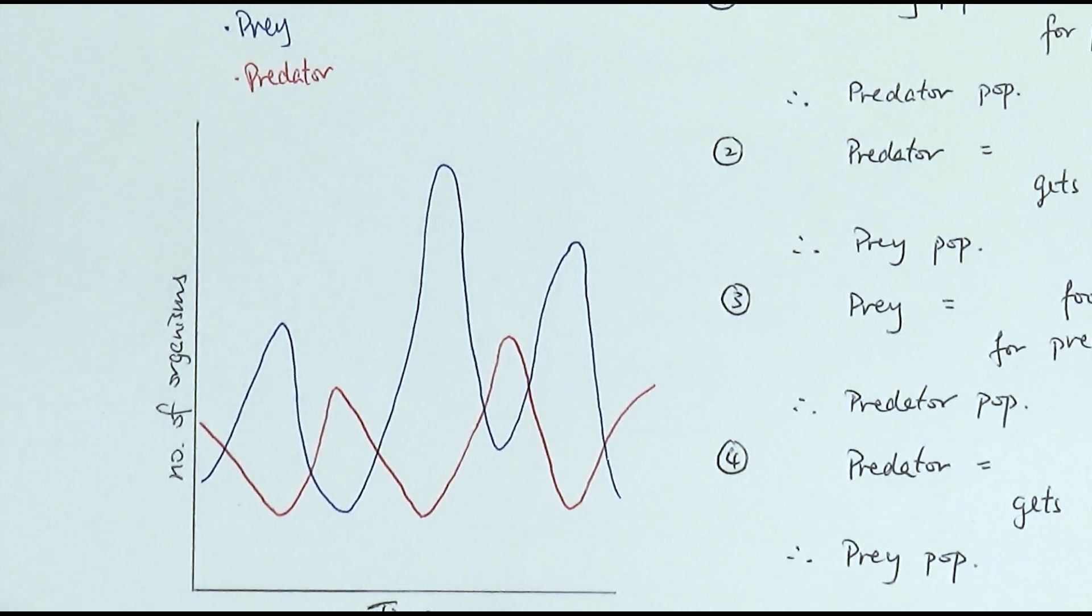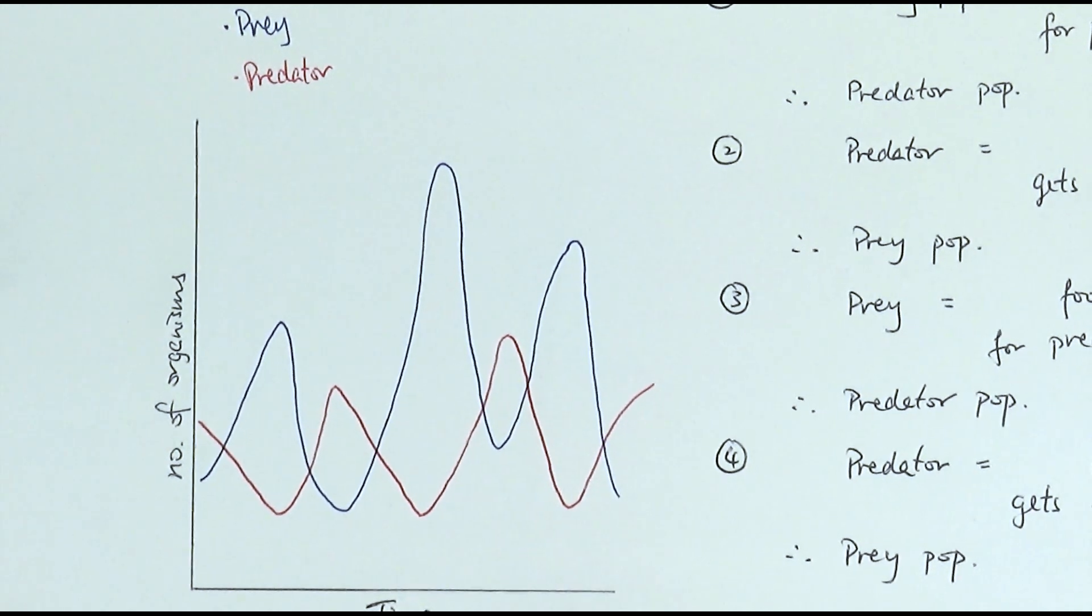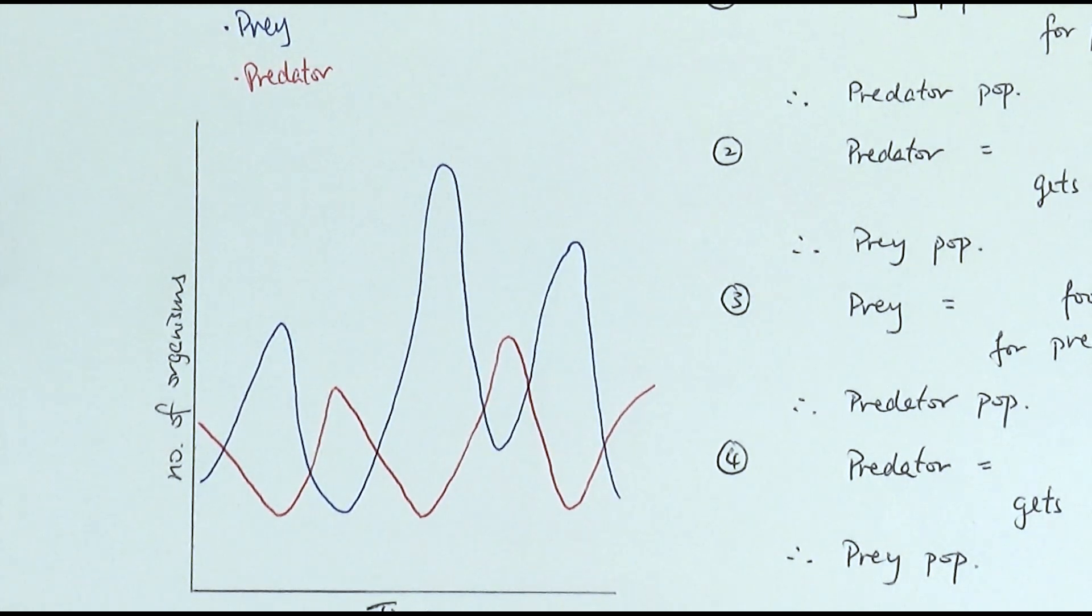So in this graph, we've got the prey and predator population size shown in the same graph. The blue line represents the population size of the prey, so the organism or species that is being eaten, and then the red line to show the predator population size, which is the organism or species that is hunting and eating the prey.